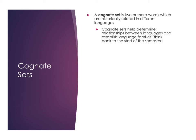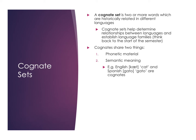Cognates always share two things: phonetic material — so they'll sound the same or similar in some ways — and semantic meaning, so they also have to have the same kind of meaning. It doesn't have to be exactly the same. For instance, the English word 'cat' and the Spanish word 'gato' are cognates. We have a velar plosive at the beginning, a low vowel in the middle, and a T sound at the end — very similar sounds, and historically they are related to each other.